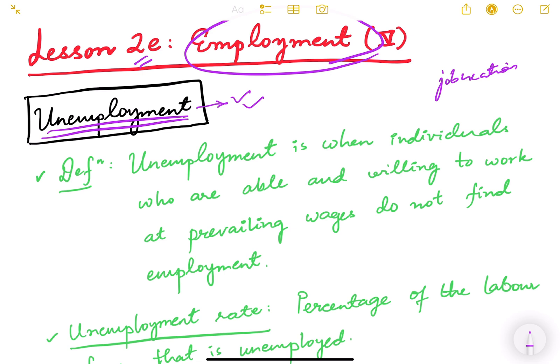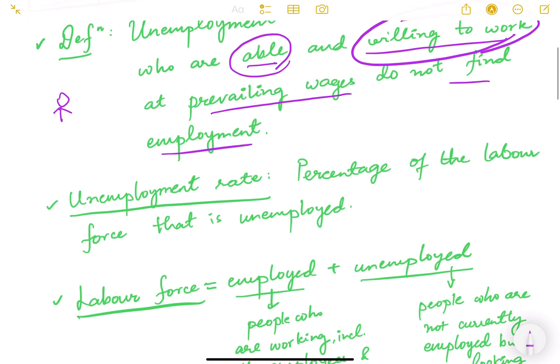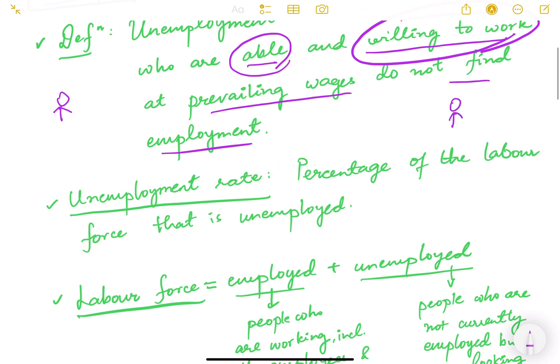Unemployment is when individuals who are able and willing to work at prevailing wages do not find employment. An individual who has the ability to work and is also willing to work at the salary and wages available in the market, but is not finding a job — such a person is known as an unemployed person. These two conditions — able and willing to work — are very important.